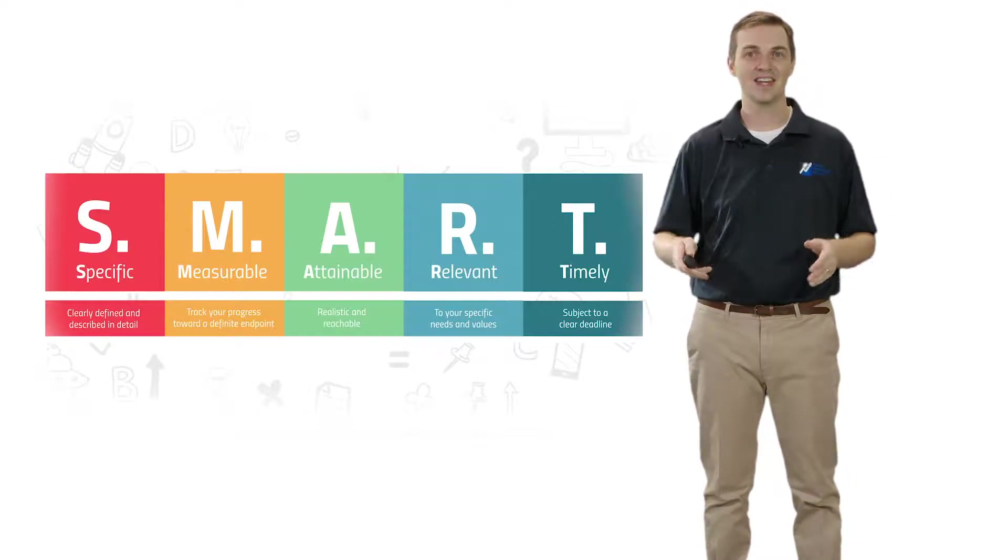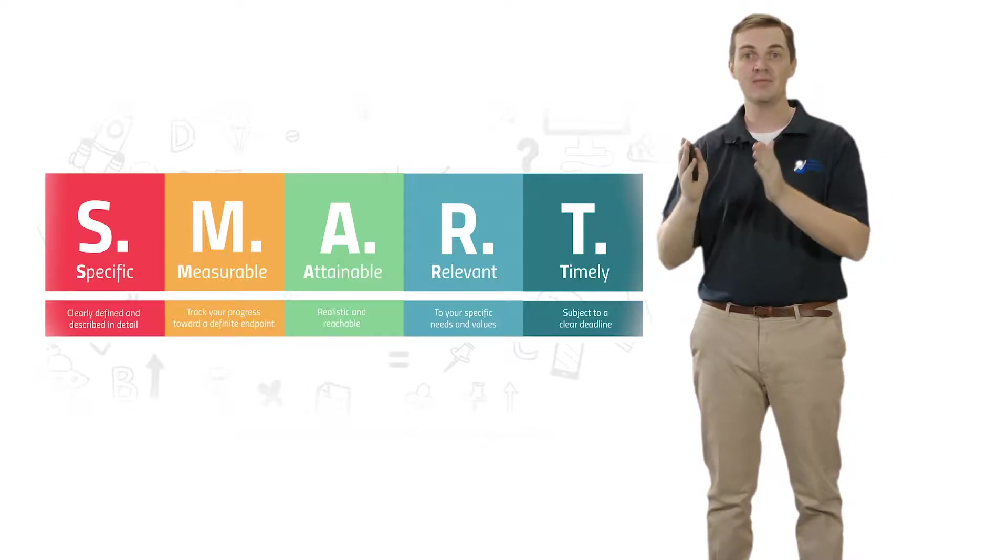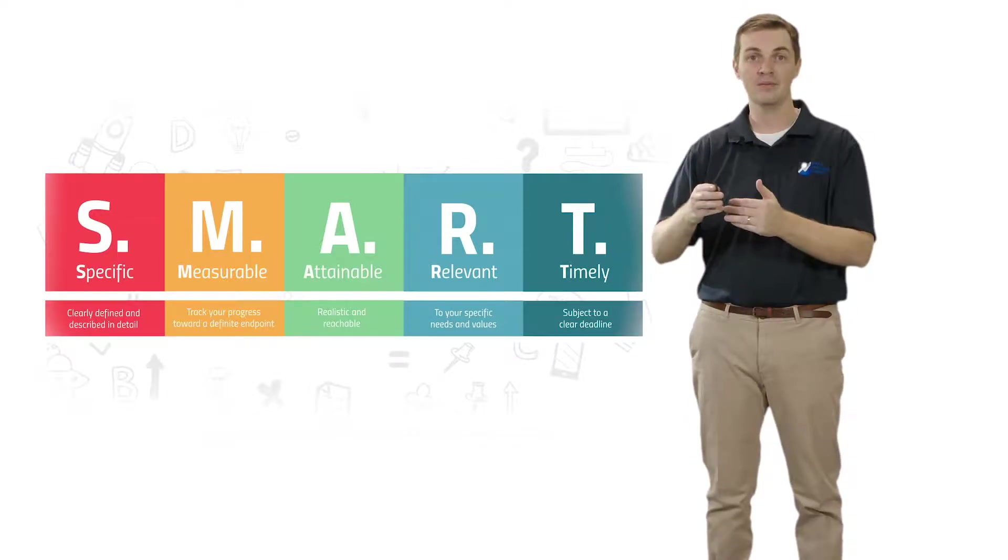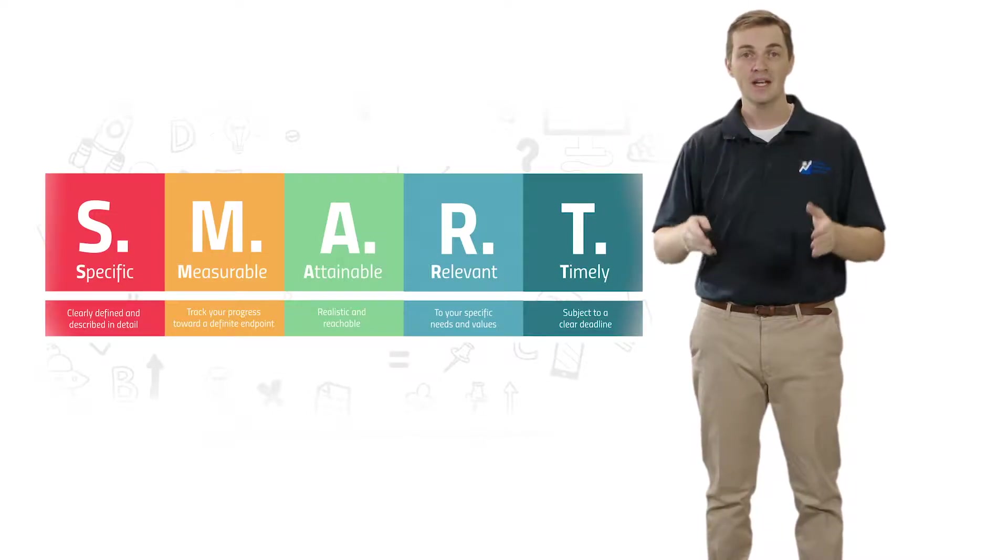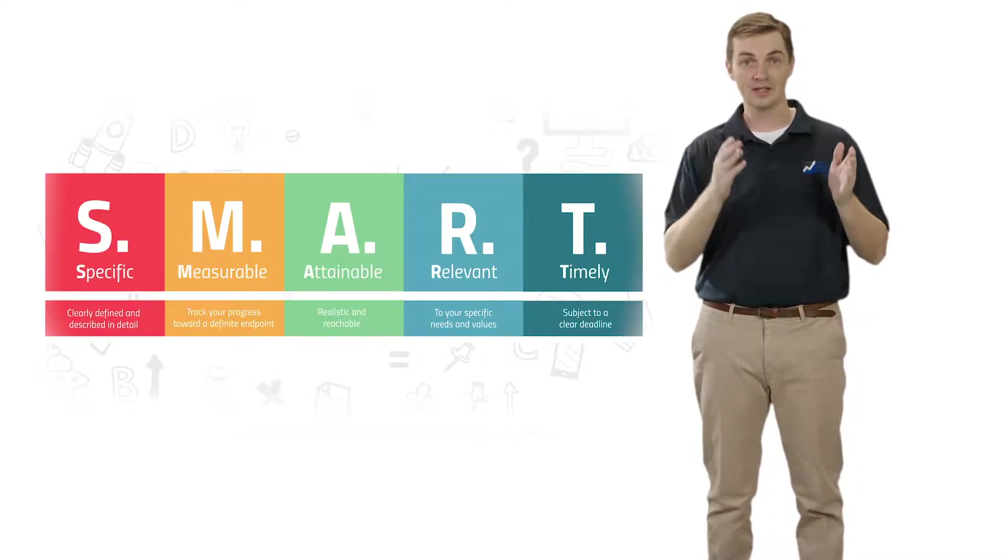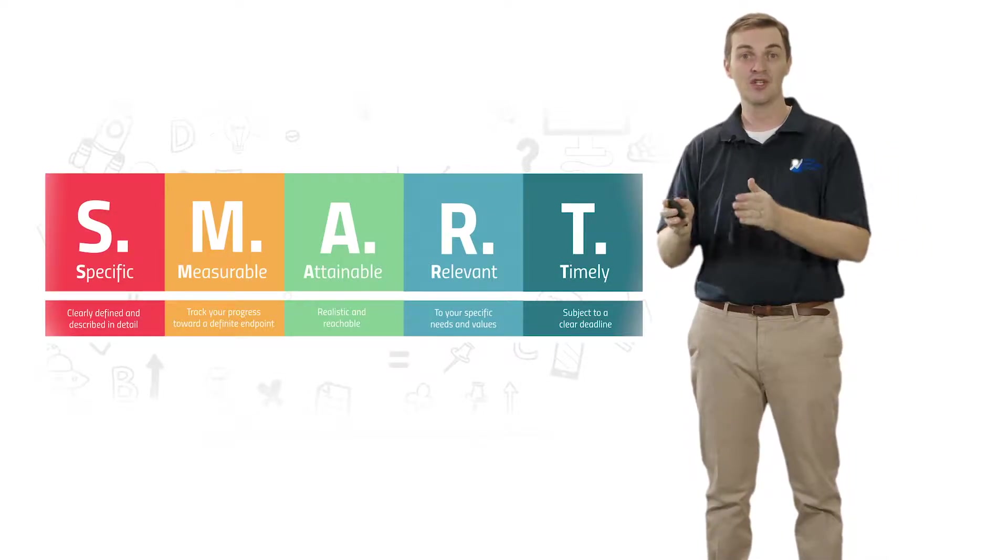The S stands for specific. Having something specific that you can measure is key to creating a goal that you can measure and improve upon. The second one is this goal needs to be measurable. So specific and measurable.